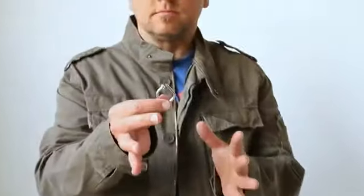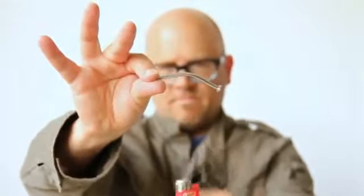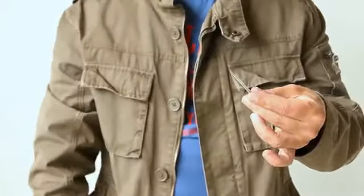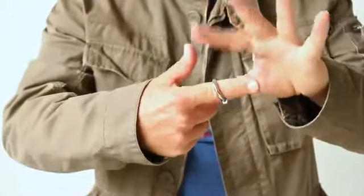It also makes for a great opening effect, because you can walk up without saying a thing, just show the nail, boom, have it bent, and then slip it onto your finger. There's a finger ring, and you can wear it throughout the rest of your close-up show as a reminder of that amazing first trick.